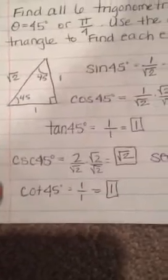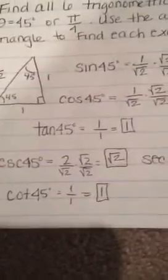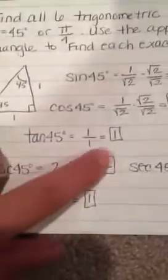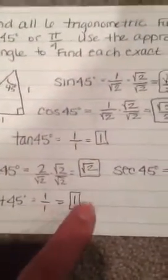Then you want to find the other three reciprocal functions. Cosecant is radical 2 and then secant is radical 2 because they're both the same as these ones so you're just flipping them. And then it would be cotangent, you're just taking the same thing as this one and flipping it and it's also equal to 1.